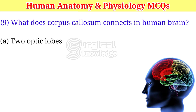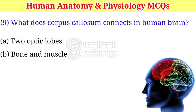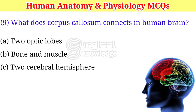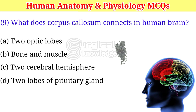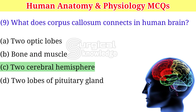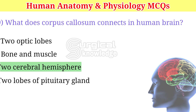What does corpus callosum connect in the human brain? A. Two optic lobes. B. Bone and muscle. C. Two cerebral hemispheres. D. Two lobes of pituitary gland. Right answer is two cerebral hemispheres.